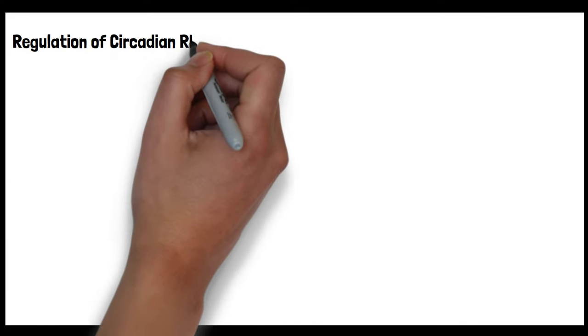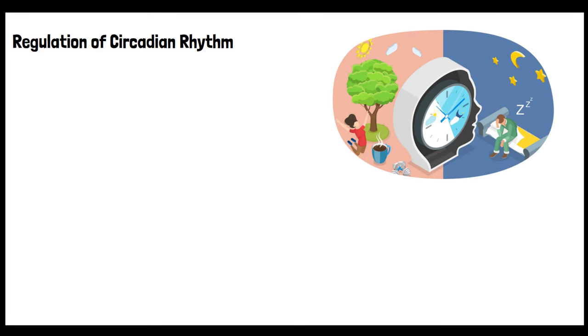Regulation of circadian rhythm. Sunlight helps to regulate the body's internal clock, or circadian rhythm, which in turn affects various physiological processes, including sleep-wake cycles. A well-regulated circadian rhythm can lead to better sleep quality, which is crucial for feeling energized during the day.